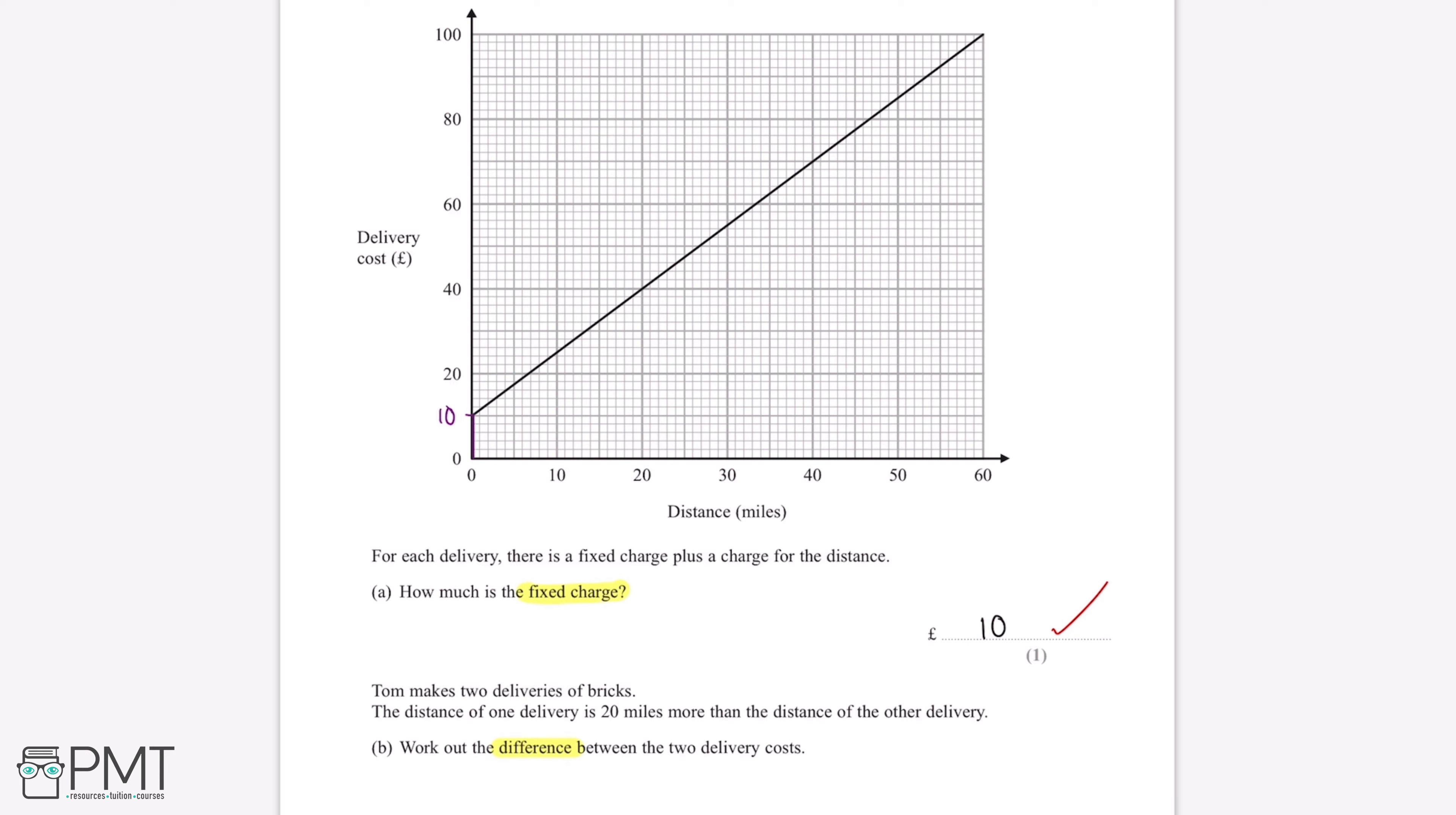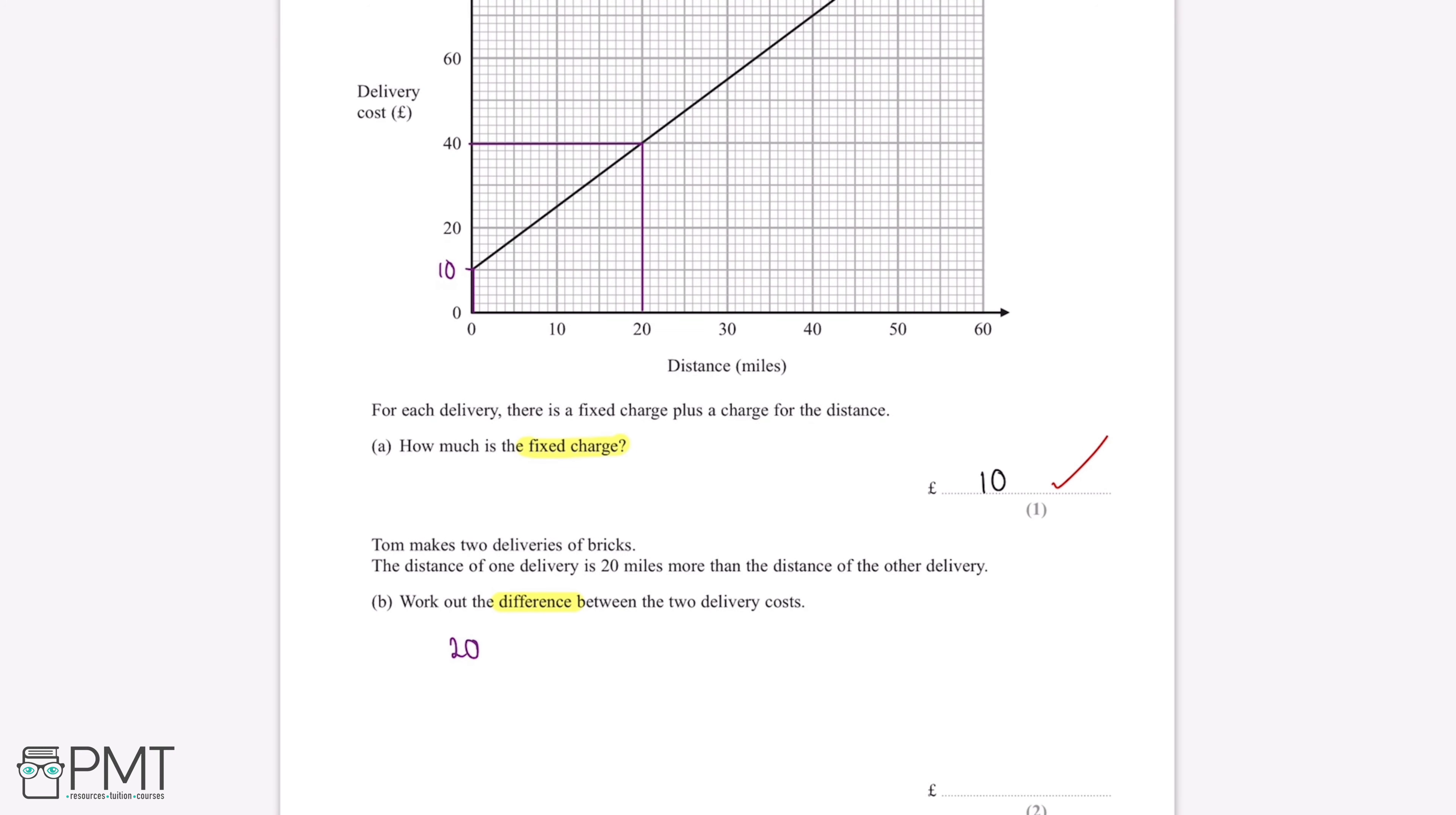We can choose the distance zero and then the distance 20. If we read off the graph, this tells us that at 20 miles the delivery cost is 40 pounds, and at zero miles the delivery cost is 10 pounds.